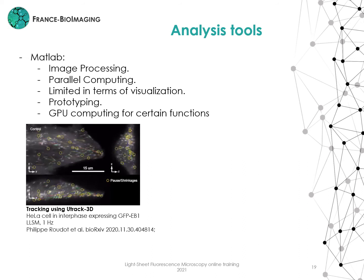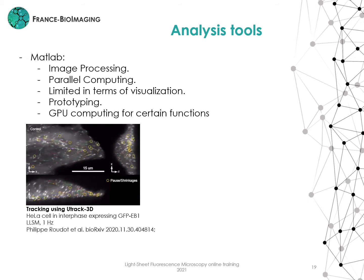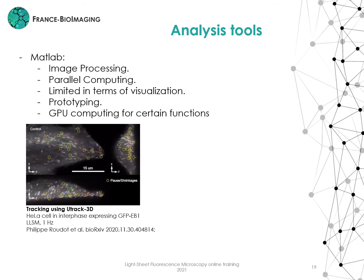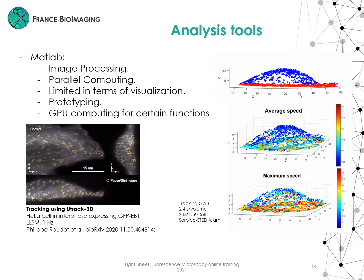Here I show a recent preprint from Philippe Roudot from the Danuser team at the University of Texas Southwestern — now a group leader at the CENTURI center in Marseille. It shows a very interesting tool for 3D tracking in MATLAB applied to lattice light sheet microscopy. We can observe some limitations in terms of visualization; nevertheless, the predictions can be very useful. I show some speed estimation of galectin-3 tracks presented as plots, a simple way of visualizing 3D tracked data.